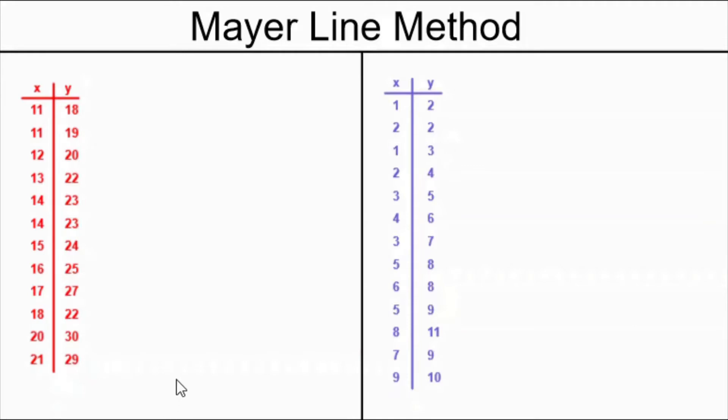The Mayer Line method is an easy method for most students in my secondary four statistics courses because those students have been finding straight line equations many times in the previous math books they've done. But when they learn the Mayer Line method, they have to handle the data in the table of values correctly.